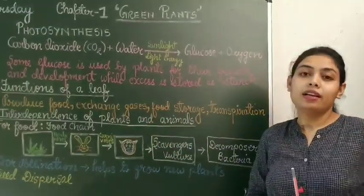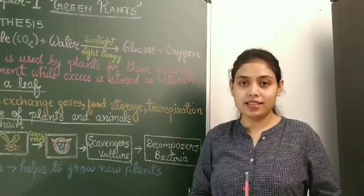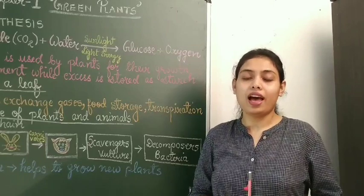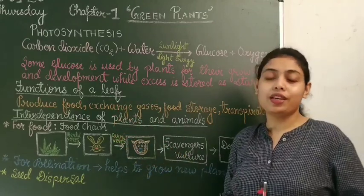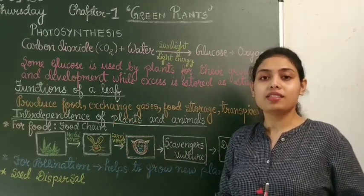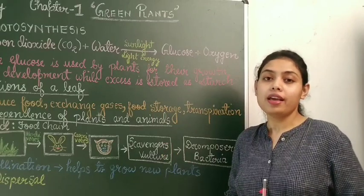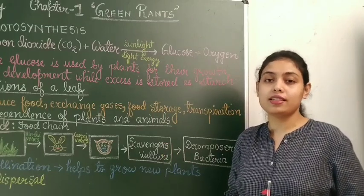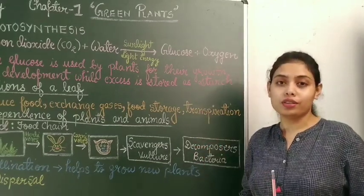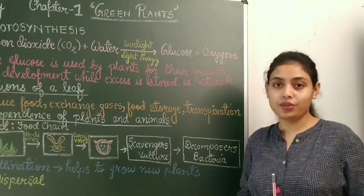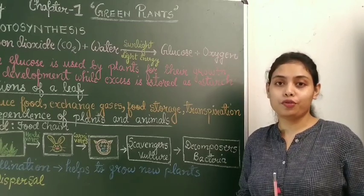Functions of a leaf: a leaf helps to produce food, as it is the site for photosynthesis and hence is known as the kitchen of a plant. Leaves help to exchange gases as stomata are present in them. Food storage: a leaf stores extra food produced during photosynthesis in the form of starch. Transpiration is the loss of water through leaves — extra water absorbed by a plant is released into the atmosphere through leaves.